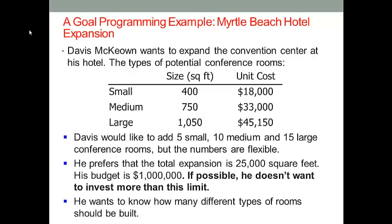The manager is facing some constraints. First, he would like to add 5 small, 10 medium, and 15 large conference rooms, but the numbers are not set in stone — they are flexible. Next, the manager prefers that the total expansion is 25,000 square feet, and his budget is $1 million. If possible, he doesn't want the investment to exceed this limit. Based on all of these constraints, we need to figure out how many different types of rooms should be built eventually.